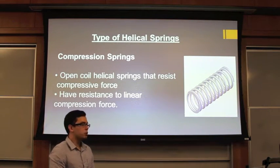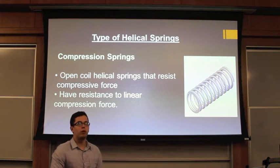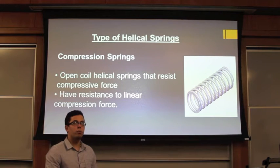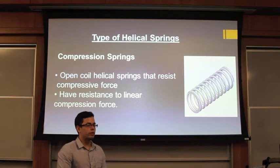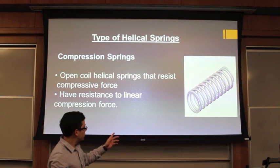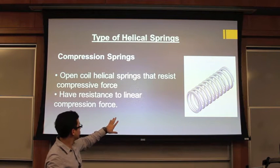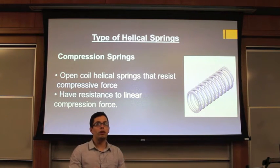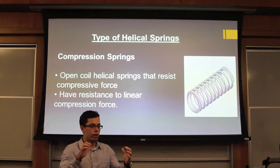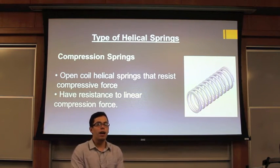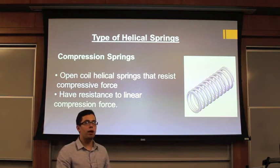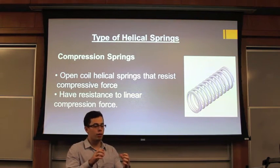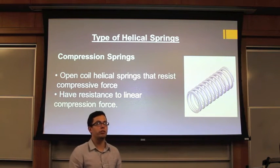Now we're going to talk about different types of helical springs. The three main types are compression, extension, and torsion springs. Compression springs are open coil helical springs that resist a compressive force. You can apply the force with components on each end or with your hands towards the center. Basically, you're trying to reduce the length of the spring, and the spring applies a resistant compression force opposite to the one you're applying, trying to recover its original length.